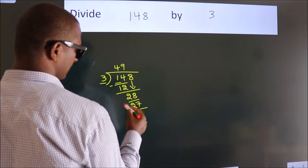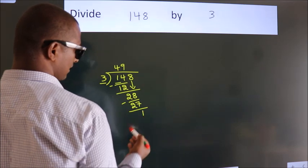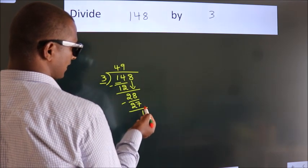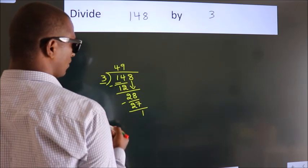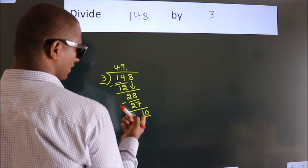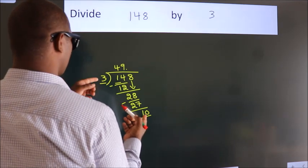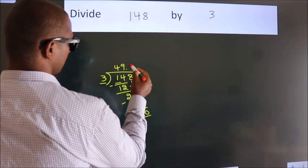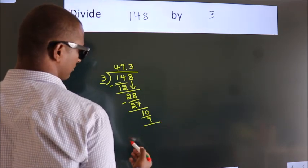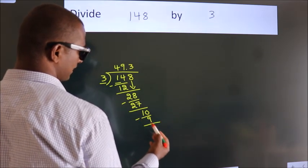Now we subtract and get 1. After this, there are no more numbers to bring down. So what we do is put a dot and take 0, giving us 10. A number close to 10 in the 3 table is 3 threes 9. Now we subtract and get 1.